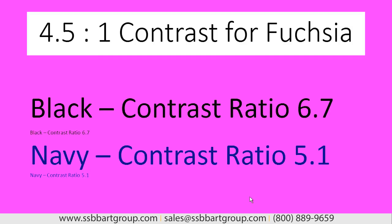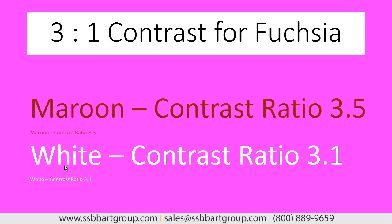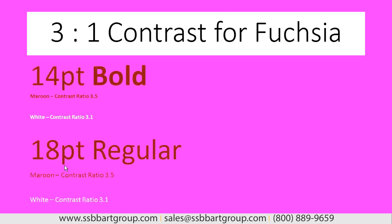With 3 to 1 contrast, we actually have specific requirements around the size of our font when we can use colors that contrast at this ratio. The maroon and fuchsia contrast ratio is 3.5, and the white and fuchsia contrast ratio is 3.1. So what this means is that if we use a font that is at least 14 points and bolded, or 18 points regular, then these are sufficient color contrasts. There's enough difference between the lightness values of these colors that we can use those in our web content and expect that a large group of people will be able to use our content.